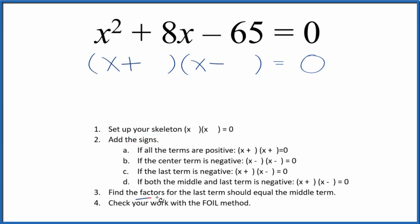Next we want to find the factors for the last term, that's the 65, and they should equal the middle term, the 8. So let's list the factors of 65 and I think that's about it. I can see that the difference between 5 and 13, that's going to be 8.